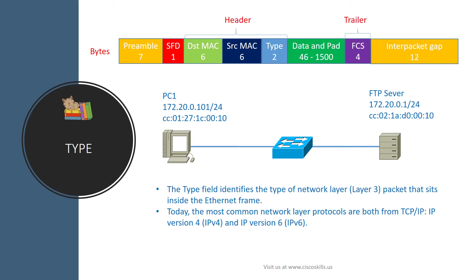After the source MAC address, the FTP server expects to receive the type field. The type field identifies the type of network layer, or Layer 3, packet that sits inside the Ethernet frame. Today the most common network layer protocols are IP version 4 (IPv4) and IP version 6 (IPv6).